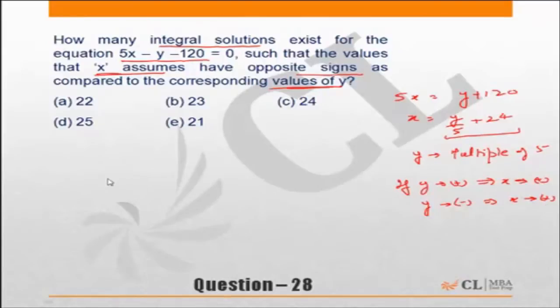So effectively, all we are saying is the smallest possible value of y has to be -5. So y = -5 is the starting point.